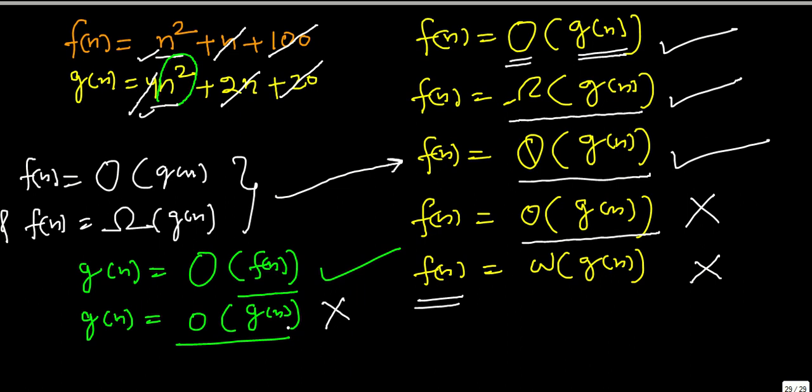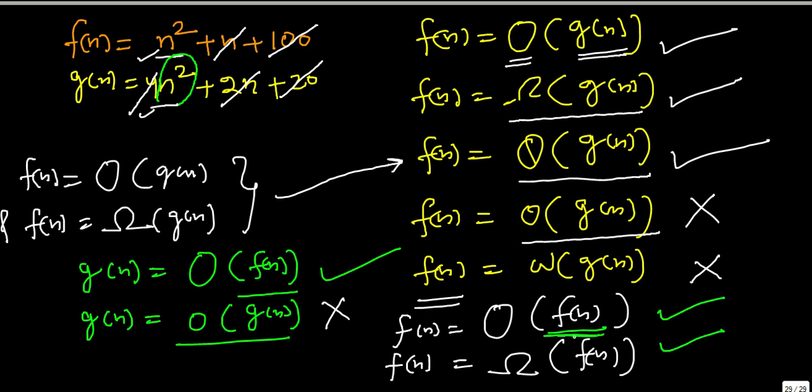So this relation does not hold. But if we talk about f(n) equal to big O of g(n), or f(n) equal to big omega of g(n), these relations are always going to hold. Because f(n) will always be greater than or equal to f(n), or f(n) will always be less than or equal to f(n).